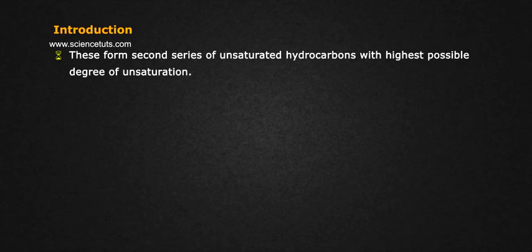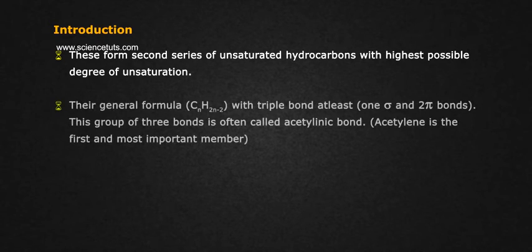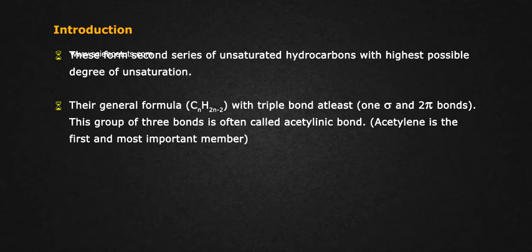Alkynes form the second series of unsaturated hydrocarbons with the highest possible degree of unsaturation. Their general formula is CnH2n-2, with at least one triple bond consisting of one sigma and two pi bonds. This group of three bonds is often called the acetylenic bond.